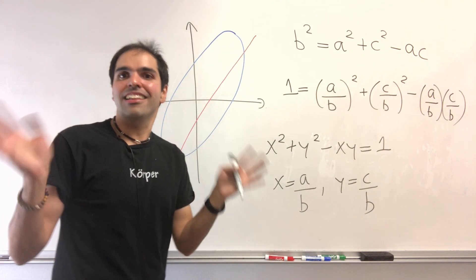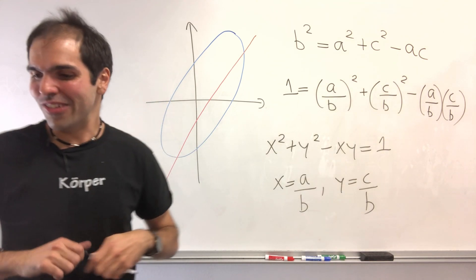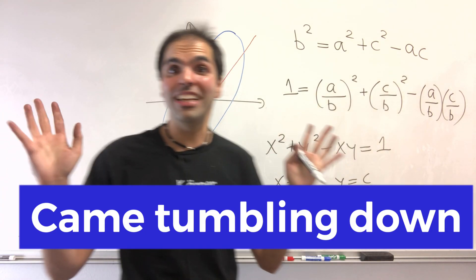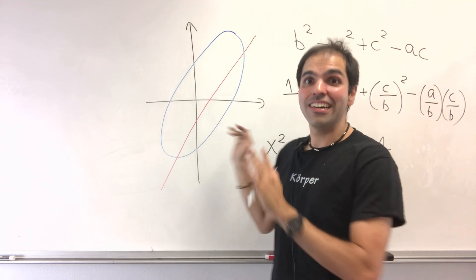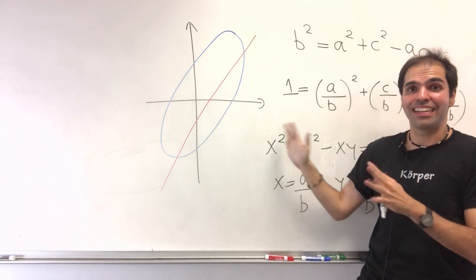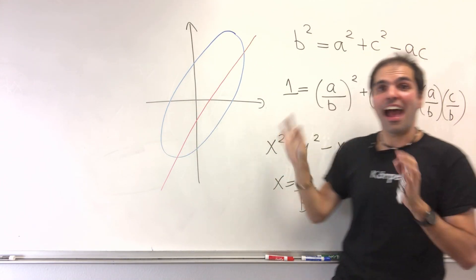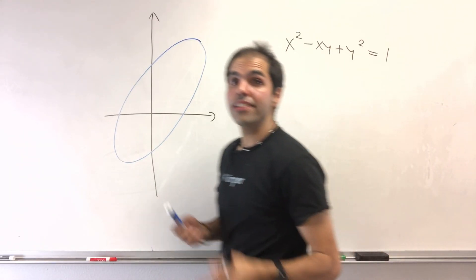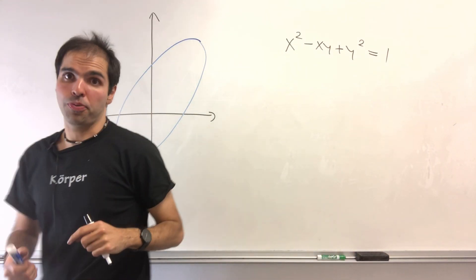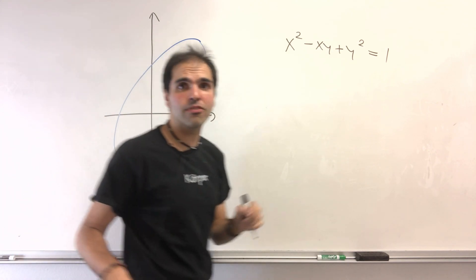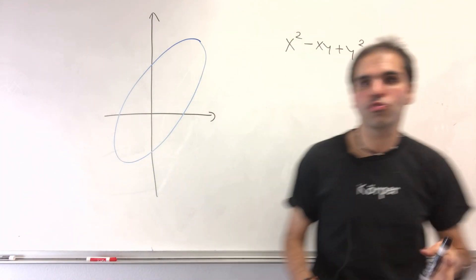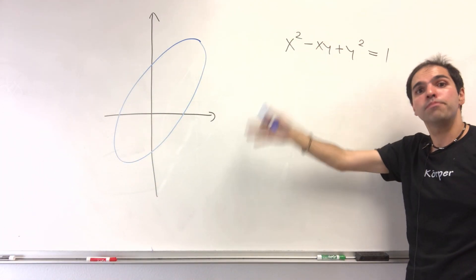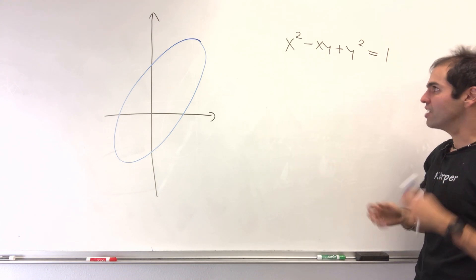Because the discriminant is negative, it actually becomes an ellipse, and you can show that ellipse is tilted by 45 degrees. Ian told me that, and then the walls of Jericho came tumbling down — because of this ellipse, we're actually able to solve this problem. So let's analyze further: x² − xy + y² = 1 is an ellipse tilted by 45 degrees.